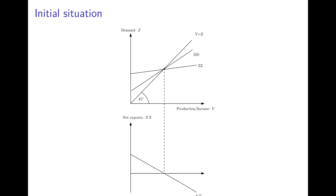We again have the situation that initially trade is balanced, so the DD curve intersects the ZZ curve here, and we are at a point where the trade balance is zero — so we don't have any trade surplus or any trade deficit.